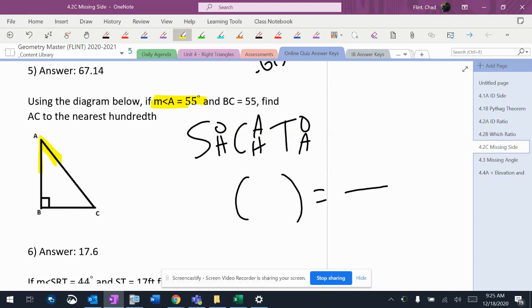Angle A is 55, that's up there. Okay, BC is 55, and it wants AC.